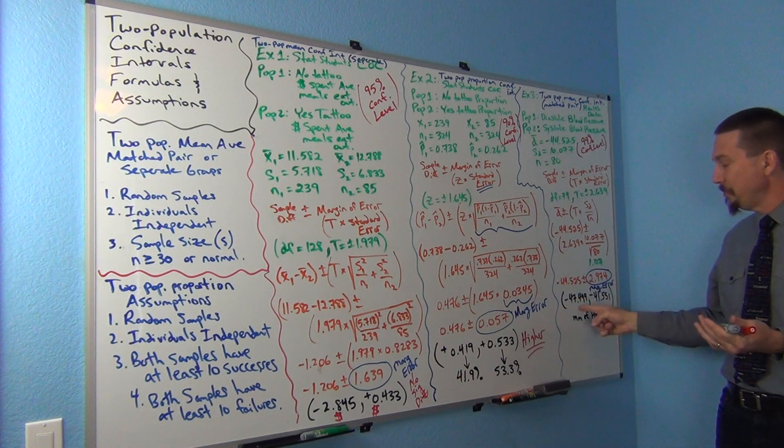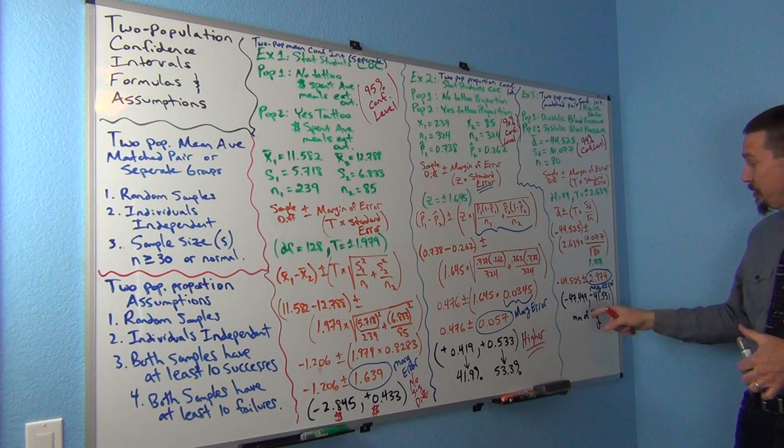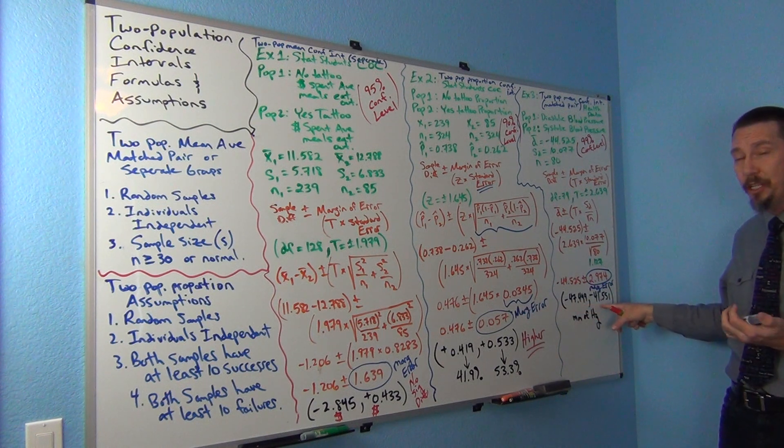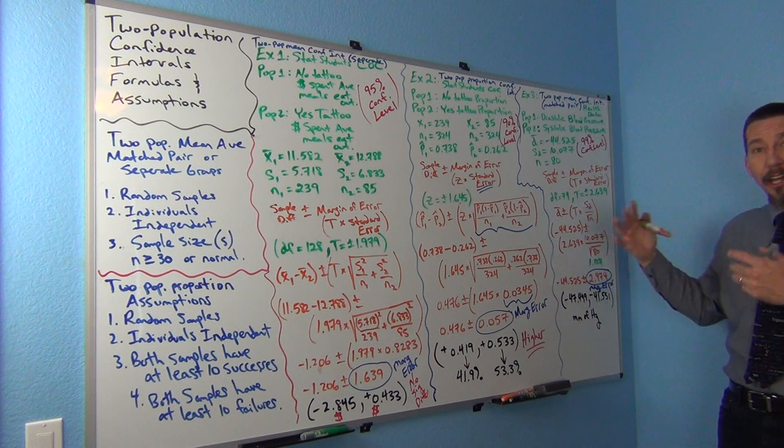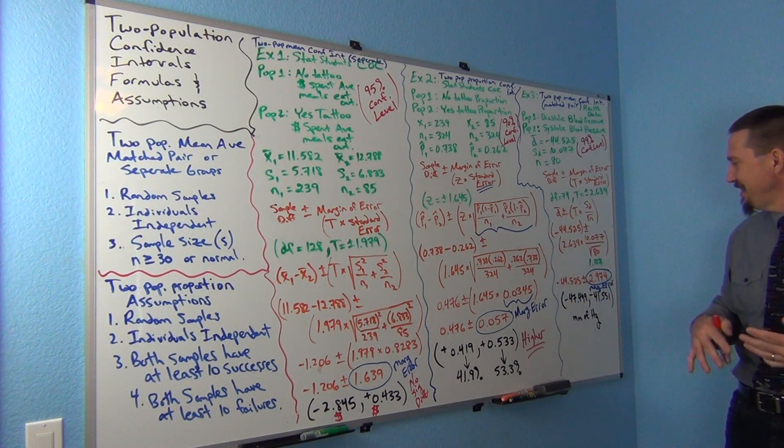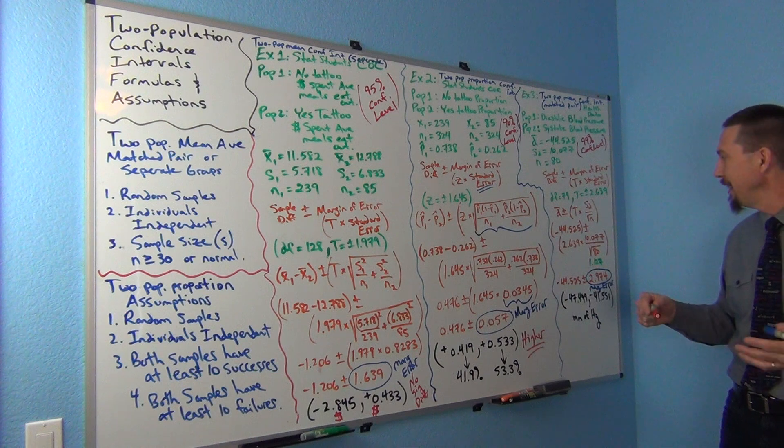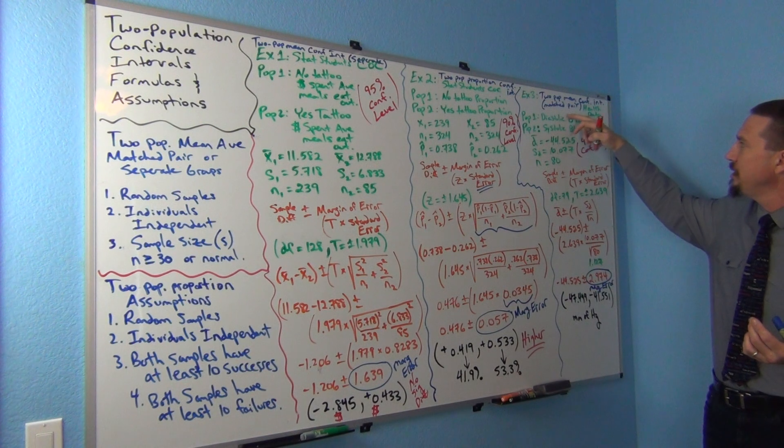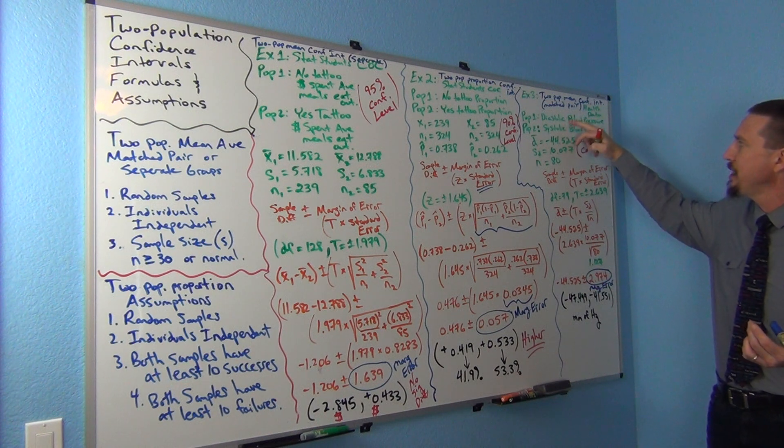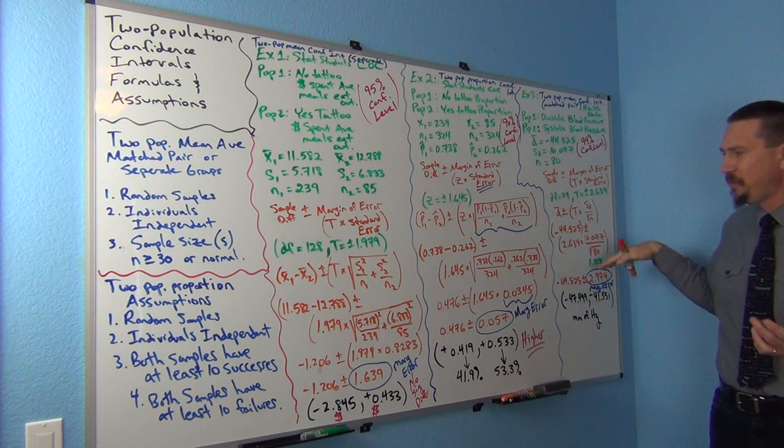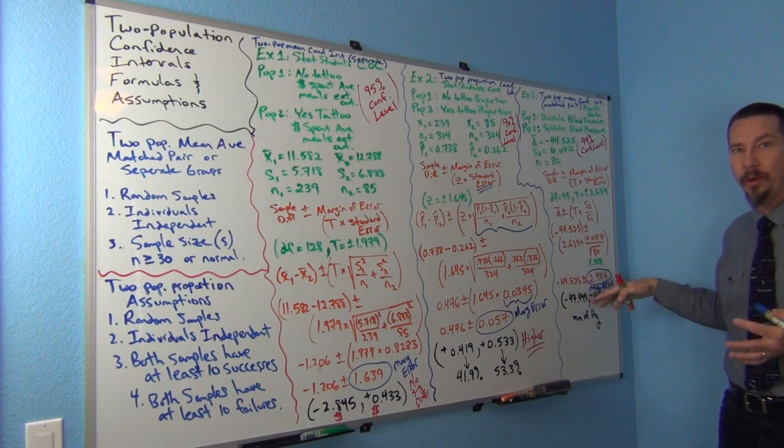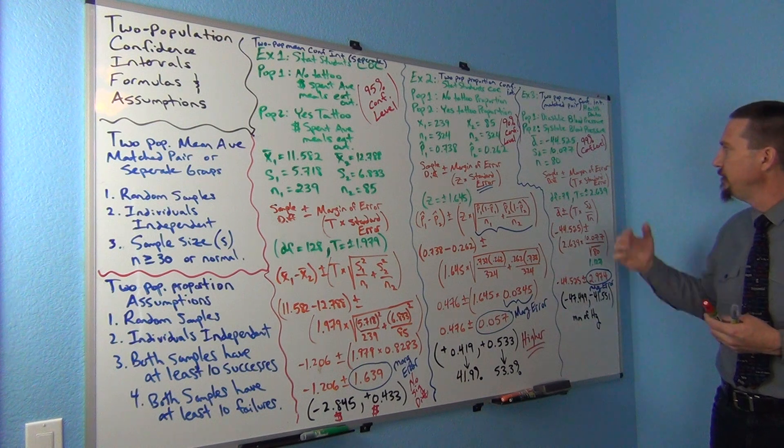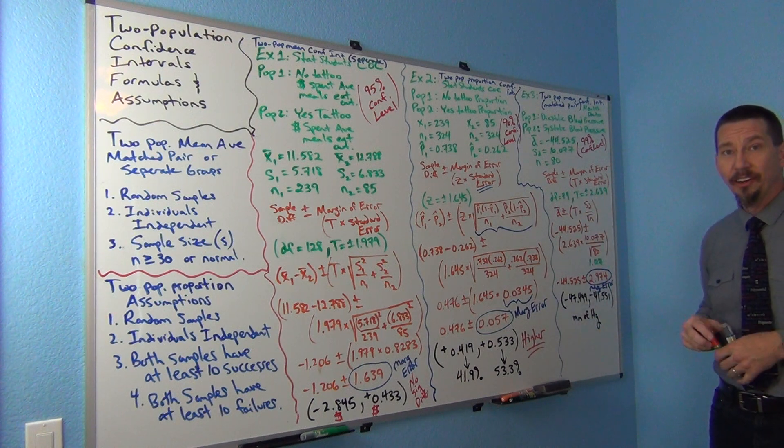So really what this is telling you is that population one is between 47.499 millimeters of mercury and 41.551 millimeters of mercury lower than population two. That's kind of how you want to think about it. Even though the calculations about differences, it's still kind of trying to get out. This is showing that diastolic blood pressure is lower than systolic and it's somewhere between 41 and 47.5 millimeters of mercury lower.